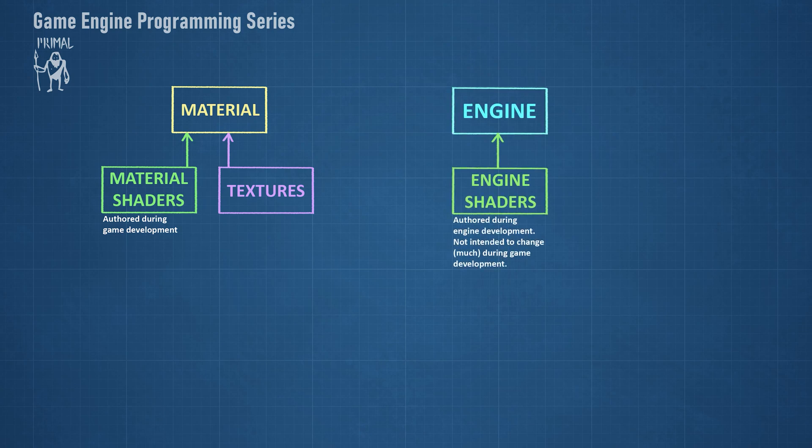The second group of shaders is used internally by the low-level renderer. These are the engine shaders. For example, there are shaders for light culling calculations and post-processing effects. Today's video is about handling this group of shaders in the engine.